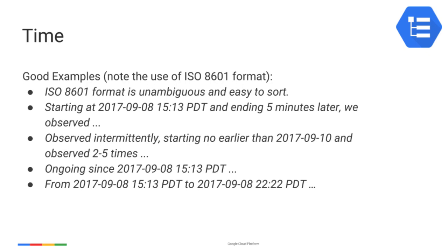Some issues are intermittent over a period. In this case, it's good to say when it was first observed, or perhaps note a time in the past when it was not happening. Remark about the frequency of observations and note one or two specific examples.